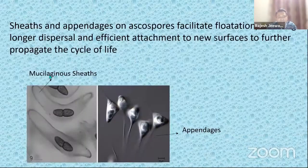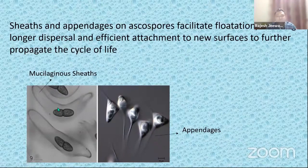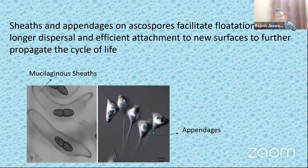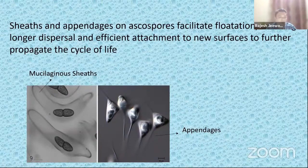We also have spores with a sheath — a large mucilaginous sheath. Why do those spores have these? Because these help those fungi to float in the water. We also have spores with appendage-like structures that are very important for attachment to new surfaces and to help them in their life cycle. So sheath and appendages basically characterize freshwater or marine water fungi.